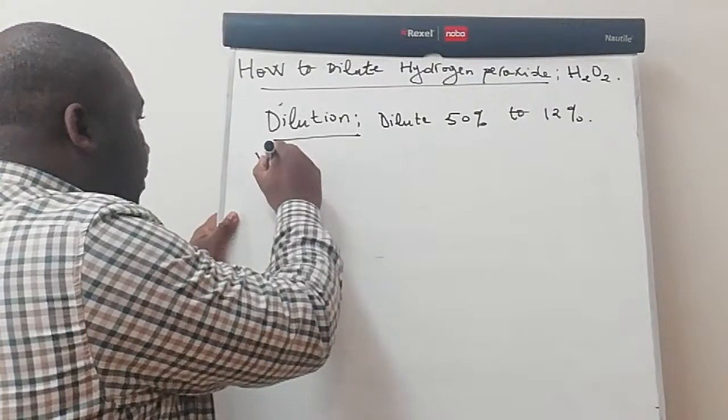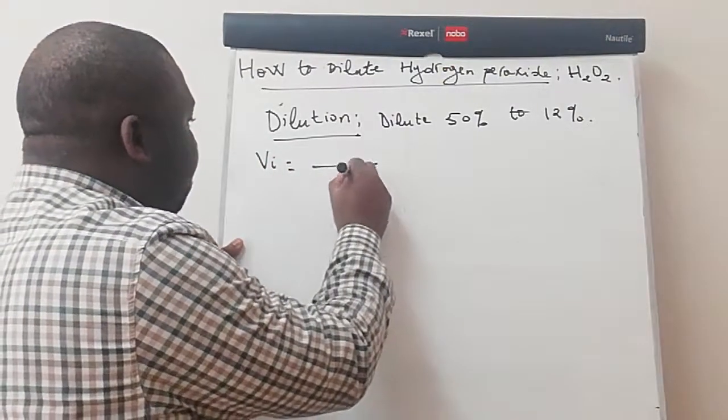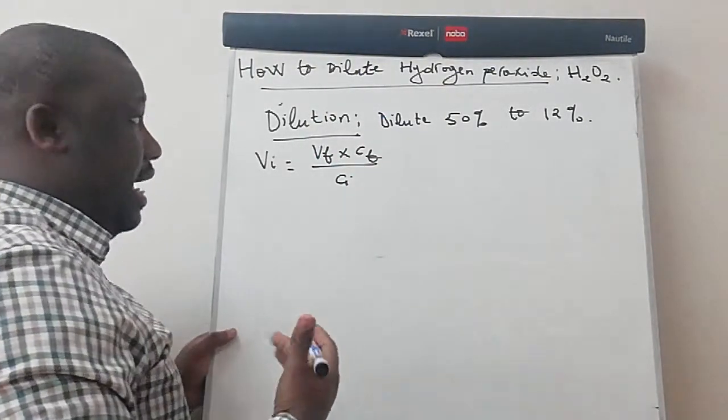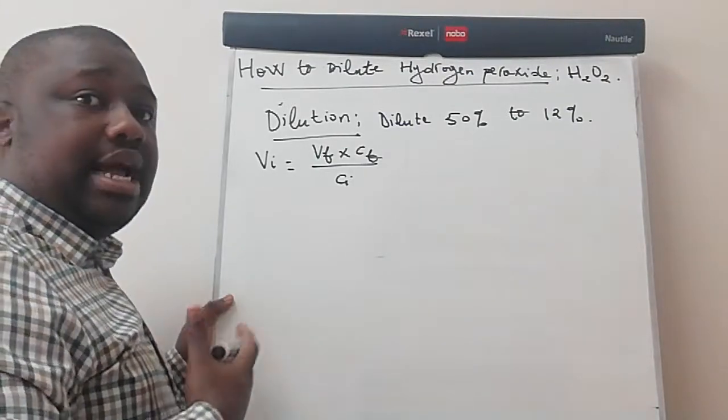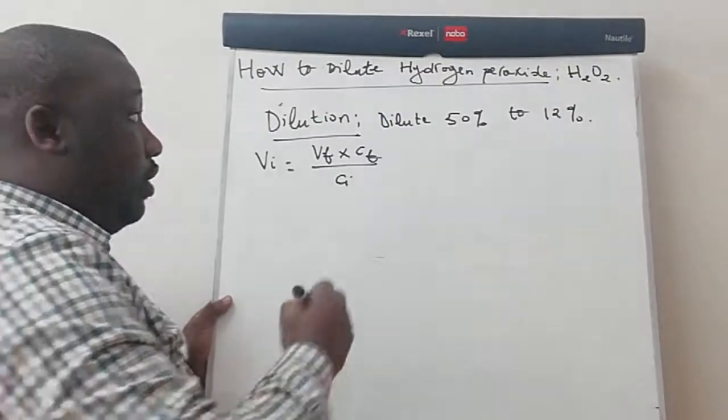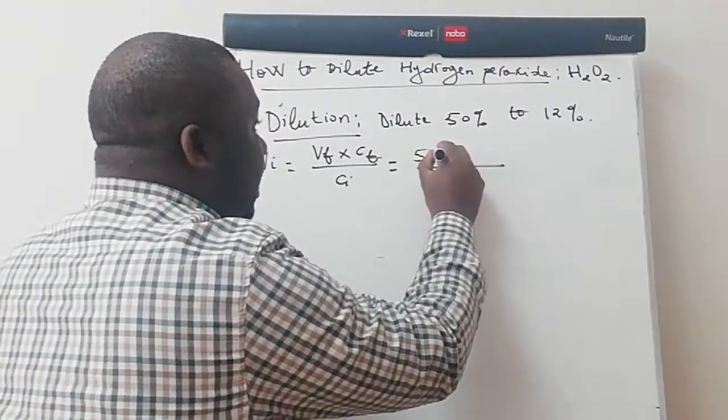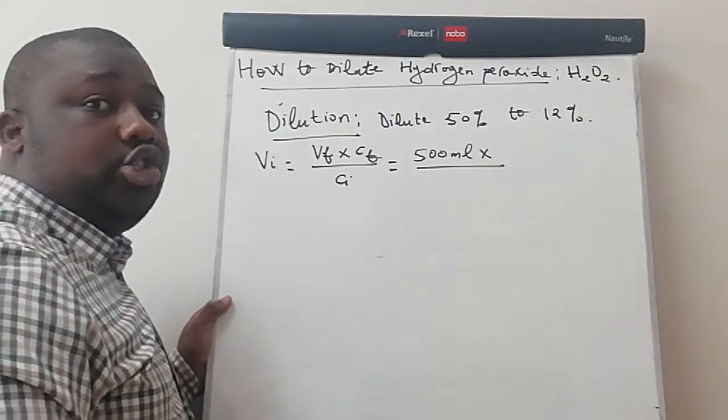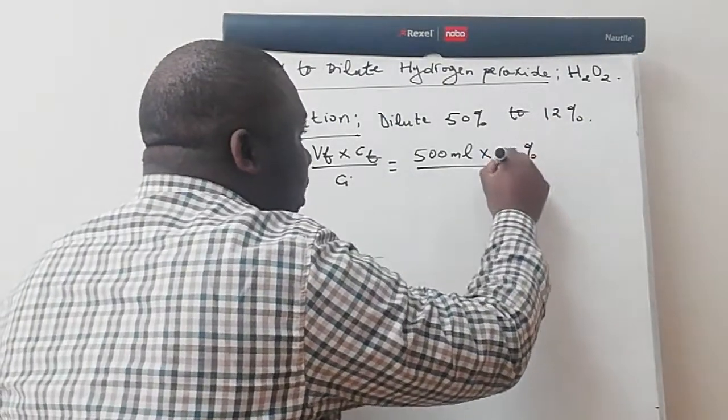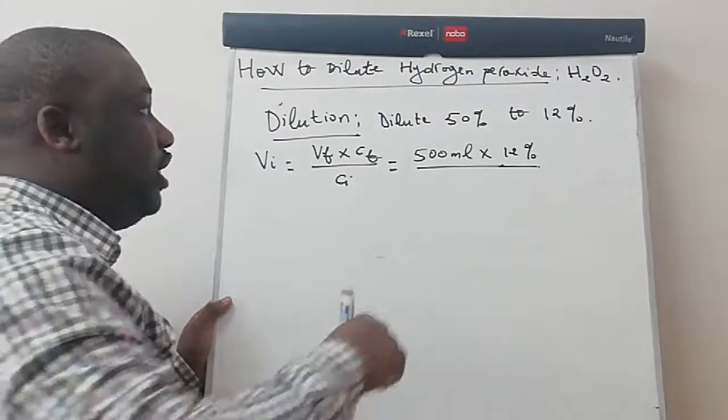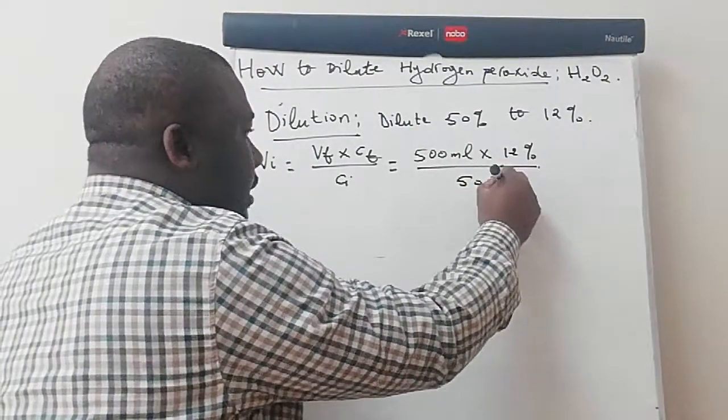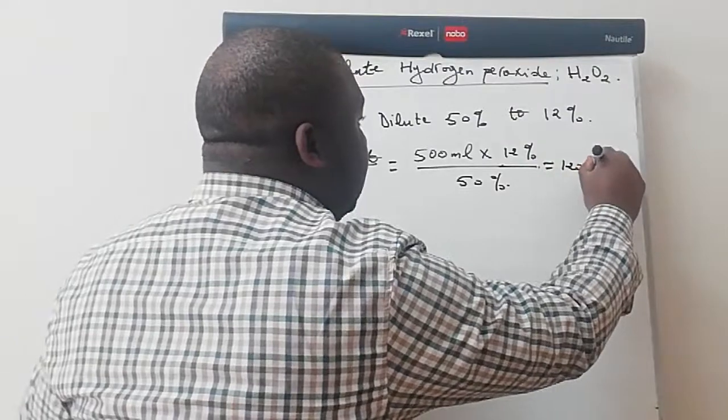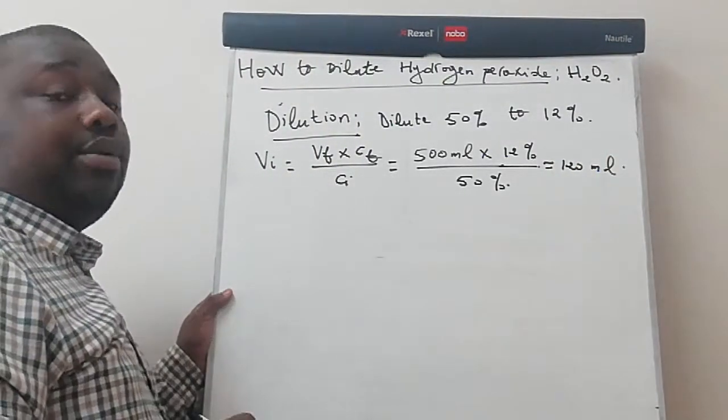We know that VI will be equal to VF times CF over CI. Let us figure a case whereby we manufacture 500 ml of 12% hydrogen peroxide, so 500 ml is actually our final volume that we wish to obtain. CF is your final concentration, which is 12%, divided by our initial concentration, which is about 50%. You can clearly see that 50% will get simplified, and we'll get actually 120 ml. This is our initial volume.